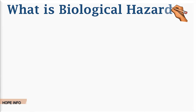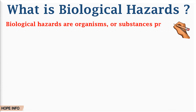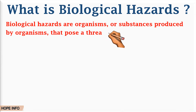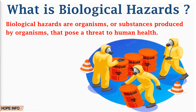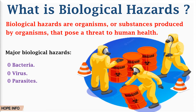So what is a biological hazard? Biological hazards are organisms or substances produced by organisms that pose a threat to human health. The major biological hazards are produced by bacteria, viruses, or parasites. This can include body fluids, human tissues, blood, and recombinant DNA.